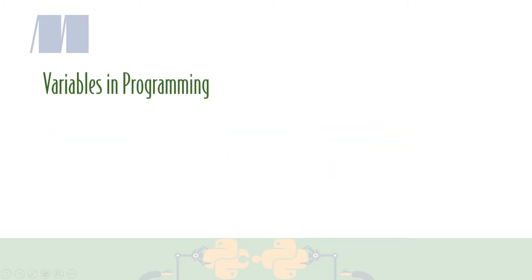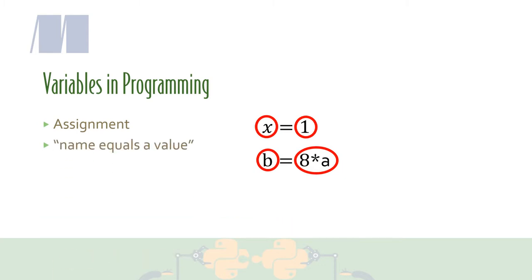In programming, lines of code with an equal sign stand for assignment, not equivalence. For example, x equals 1, or b equals 8 times a. In programming, the thing to the left of the equal sign is a name. The thing to the right of the equal sign is an expression that evaluates to some value. So in programming, you're saving a value to a name.